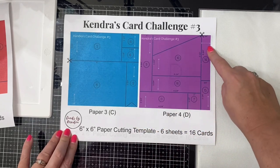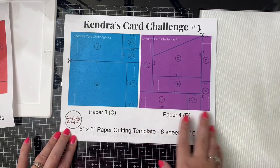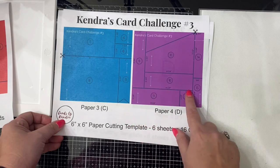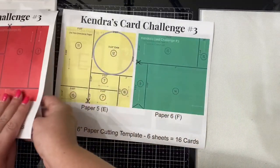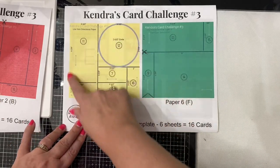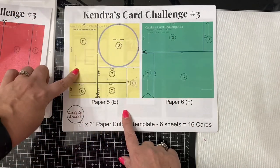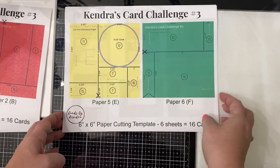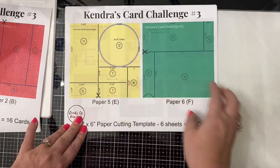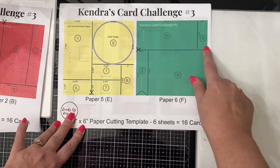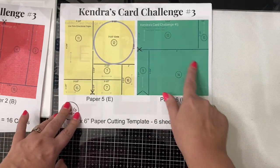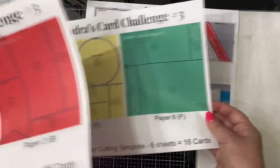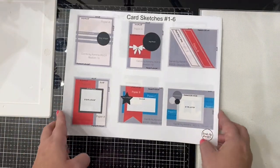For paper D there is one little piece that has a horizontal arrow, so unless you turn card sketch number 14 the other way, you'll want to use non-directional paper for paper D as well as for papers E and F. For paper E the arrows go in different directions so it definitely needs to be non-directional. There's also a three-and-a-half inch square where you'll need to cut out a circle using either a paper punch, a circle die, or a circle cutter. Paper F is pretty straightforward.